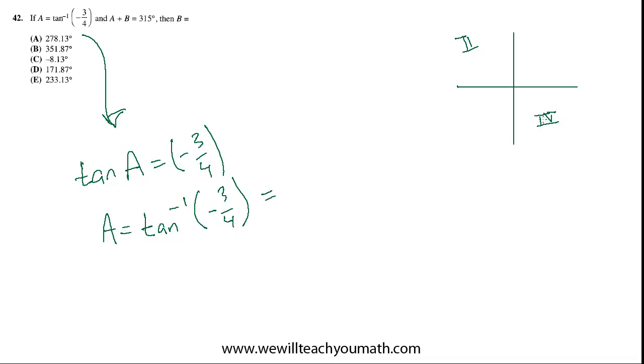So the angle that it gives us for A turns out to be negative 36.87. And that makes sense because that means there's some line that we could draw over here. And that's the triangle where the opposite is 3, the adjacent is 4, and the angle, the reference angle is 36.87, but it's negative because it's below the horizontal axis. So that's the A value that you would find.